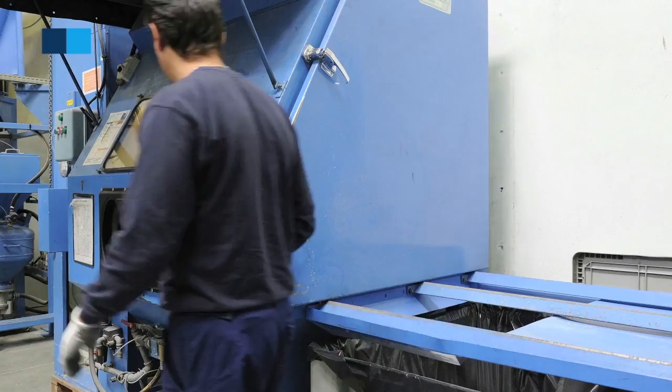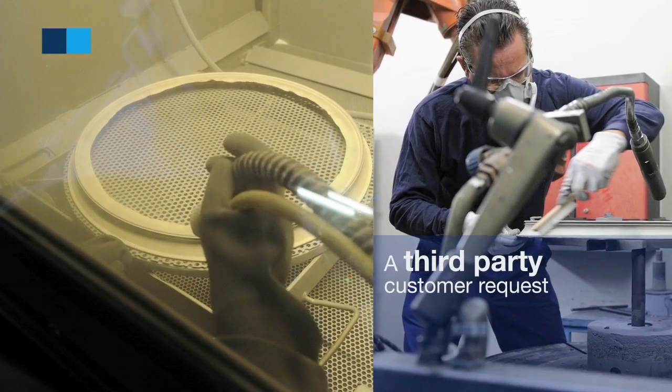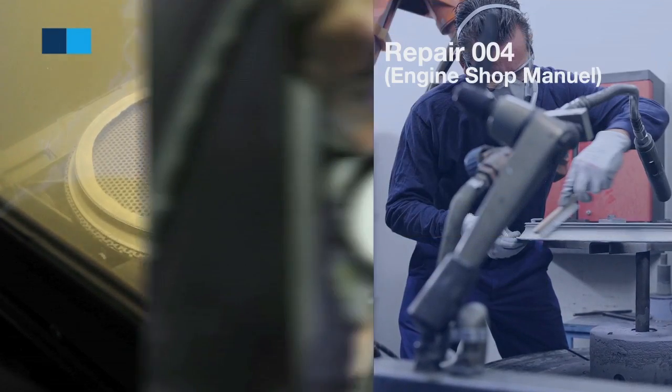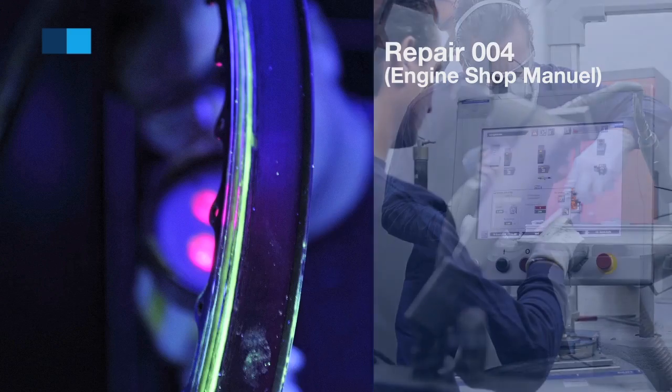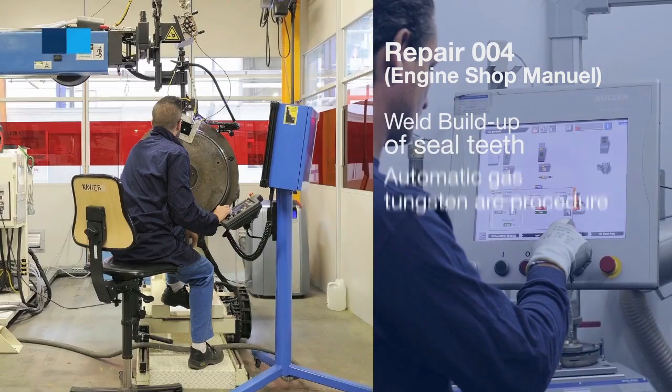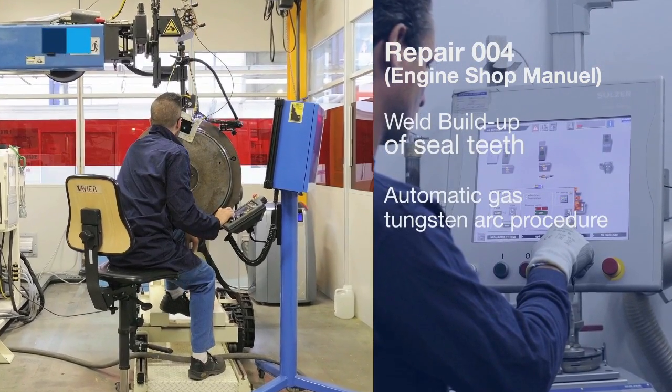CRMA was asked to develop this repair solution at a third-party customer's request. Called Repair 004, it involves weld build-up of seal teeth using an automatic gas tungsten arc welding procedure.